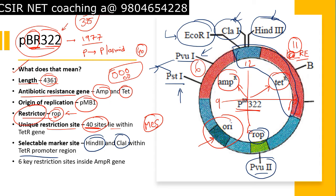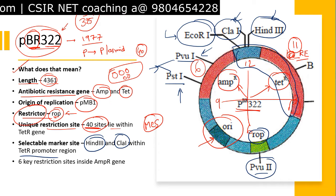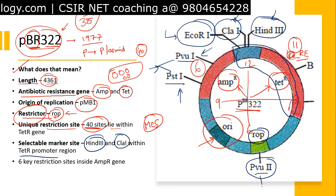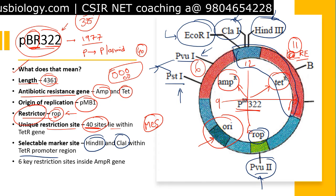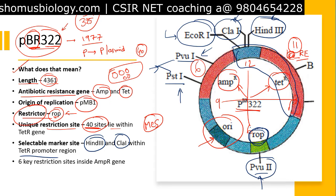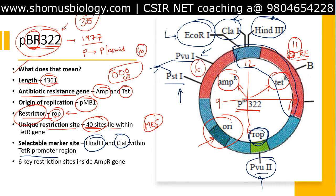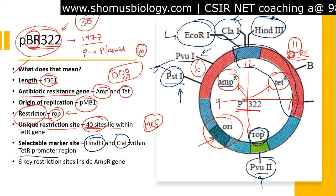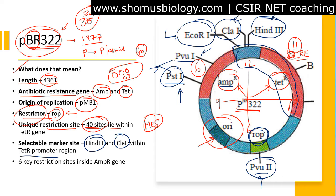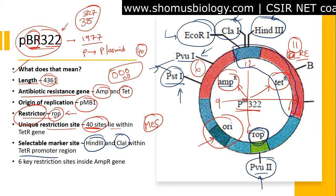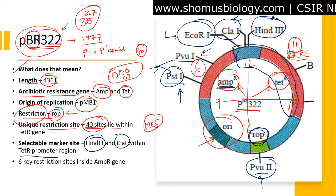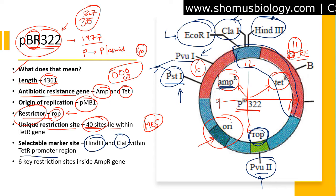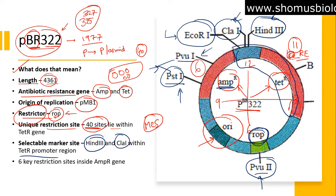The importance of having restriction sites embedded within these gene regions is that we can cut those genes and insert a gene of interest. For example, if we insert a gene at the PvuII site it will disrupt the ROP gene, meaning copy number will no longer be maintained. Similarly, inserting something at the PstI site within the ampicillin resistance gene will disrupt that gene, so the host E. coli will not grow in the presence of ampicillin. This is why restriction sites are placed within the antibiotic resistance genes.